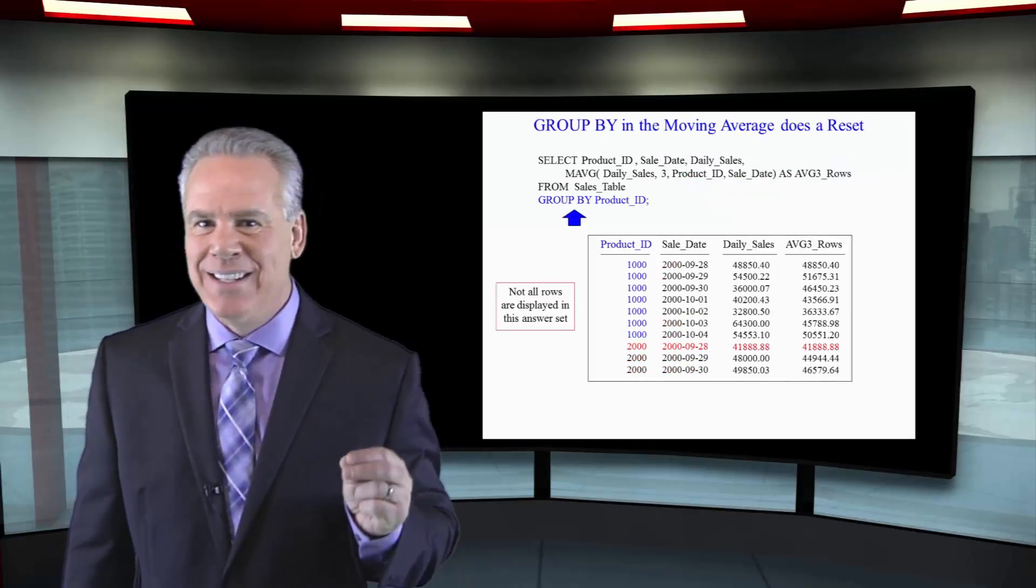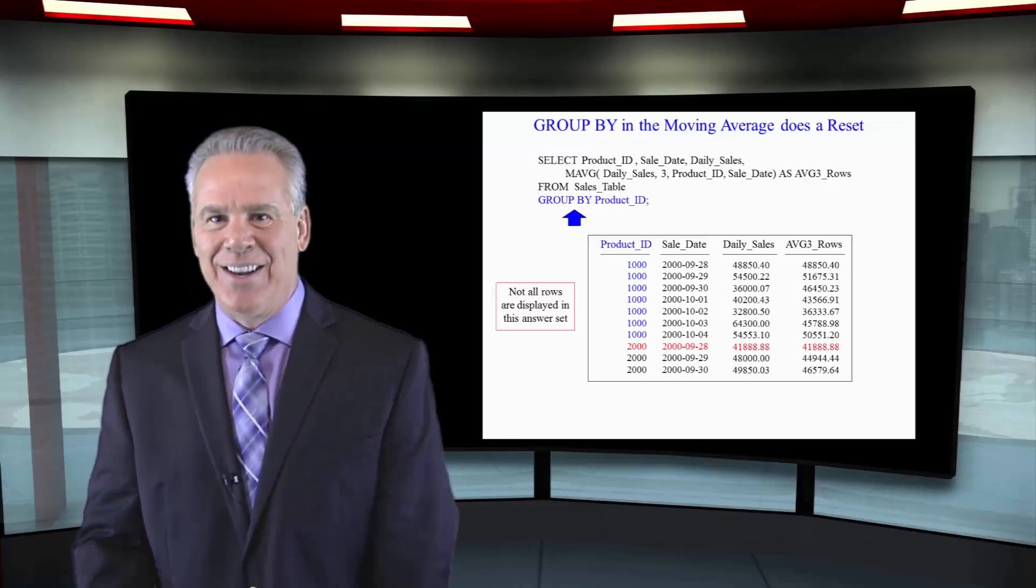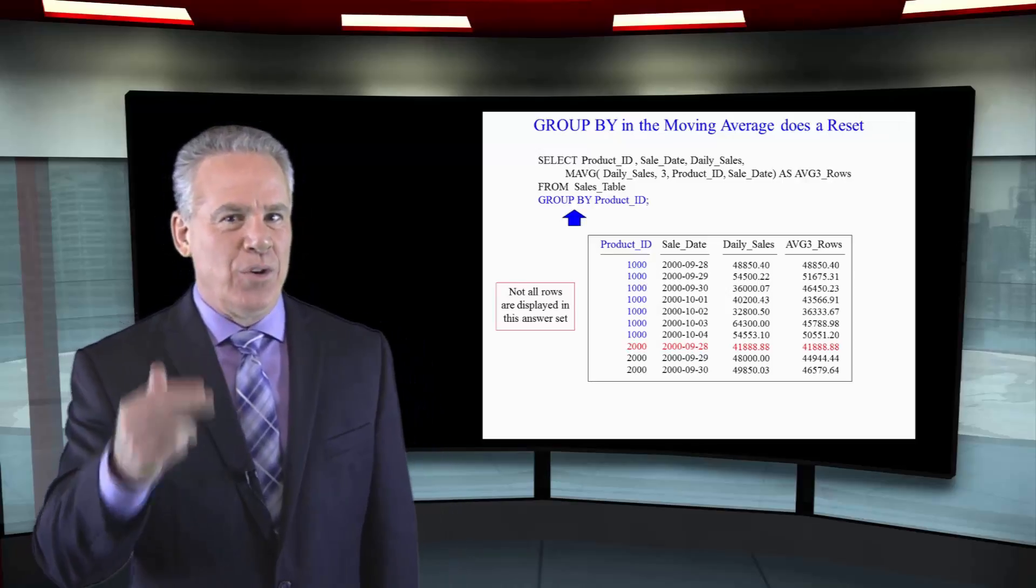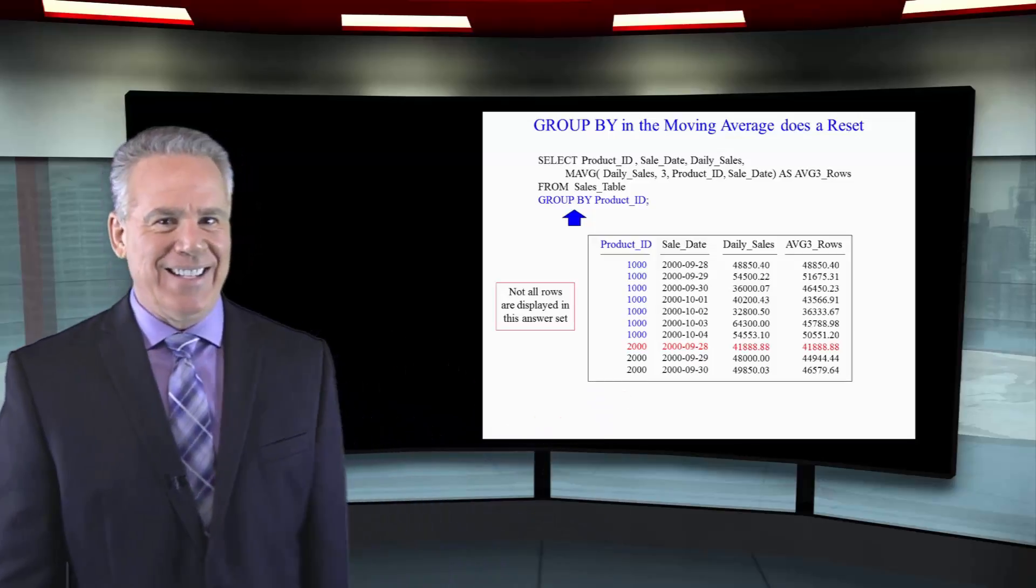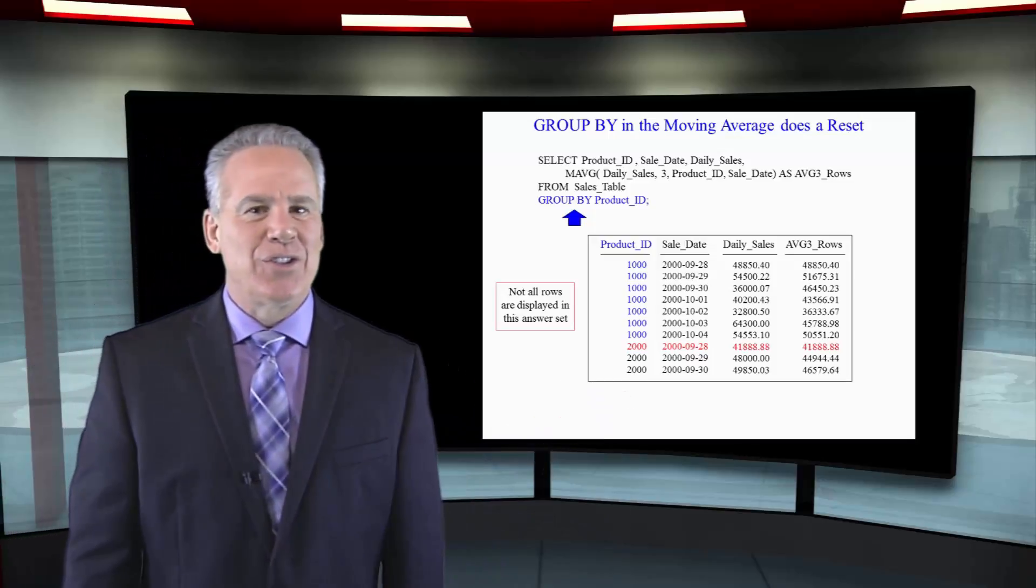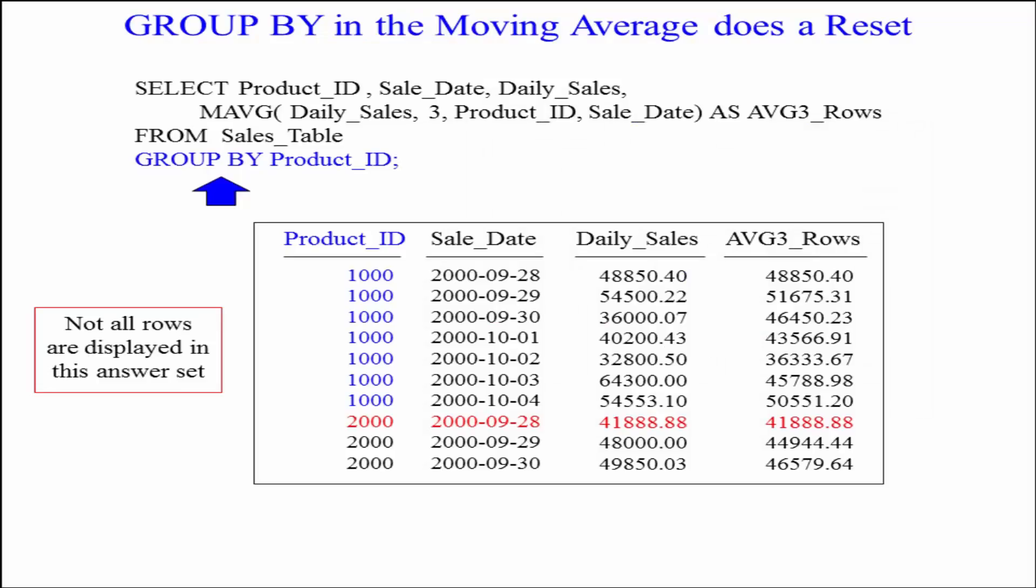Since this is a Teradata syntaxed ordered analytic, we're doing our moving average and we've got our group by product ID. So it's going to start over again when it gets to a product ID break of product ID 2000. Now remember, the beautiful thing about the group by is it does reset the ordered analytic.